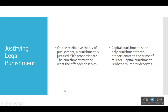Primoratz defends capital punishment against the argument that we're somehow demeaning or disrespecting the intrinsic dignity of human life — he denies that, arguing capital punishment affirms the murderer's humanity by recognizing his responsibility for his actions. On the retributive theory of punishment, a punishment is justified if it is proportionate — the punishment must be what the offender deserves. Again, consequences — whether having this policy will produce a greater balance of good over bad outcomes — are irrelevant. The only relevant considerations are justice, and two key concepts within justice: proportionality and desert.